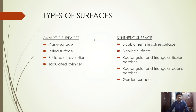The surfaces can be classified into two categories: analytic surface and synthetic surface. An analytic surface is an extension of a surface using known forms or curves, whereas a synthetic surface is an extension of a surface using free-form or man-made curves.